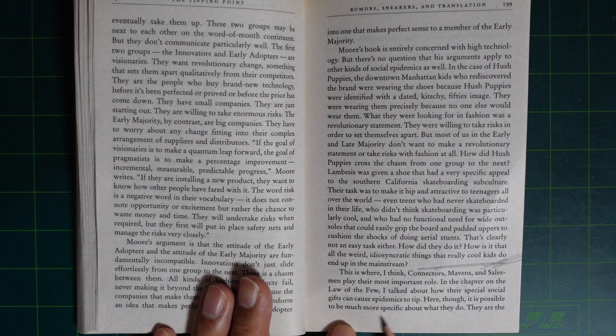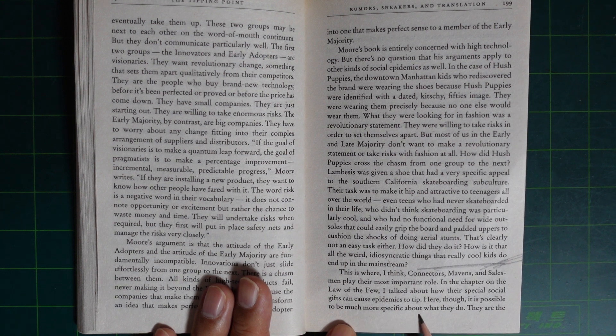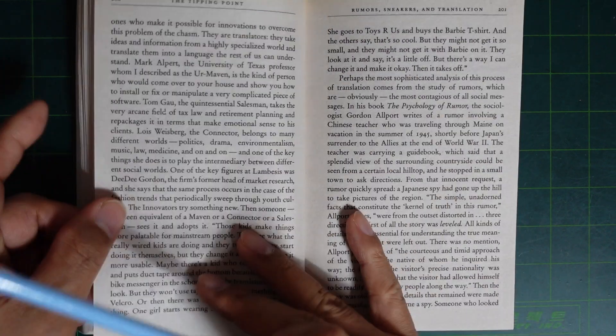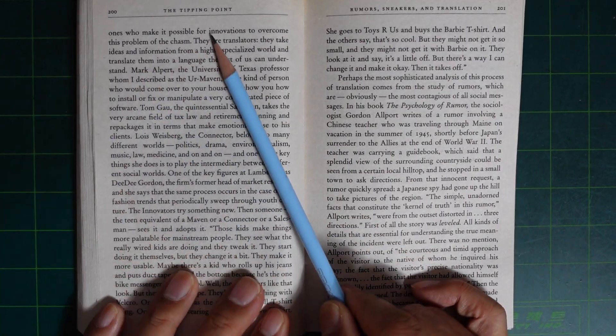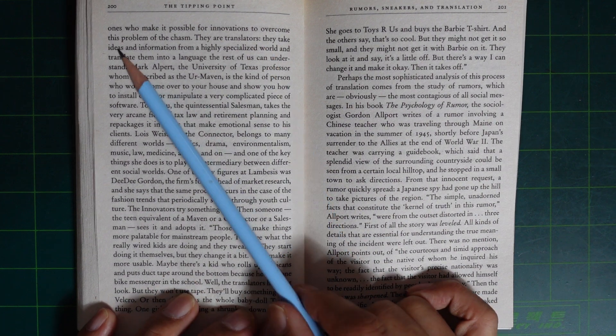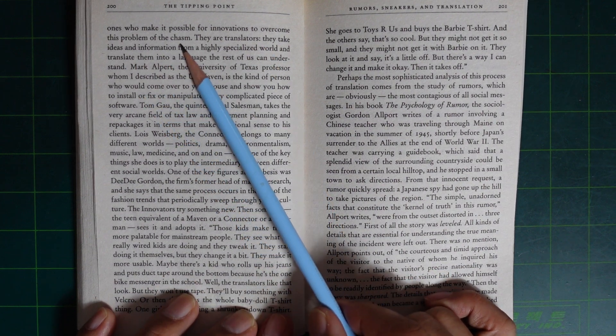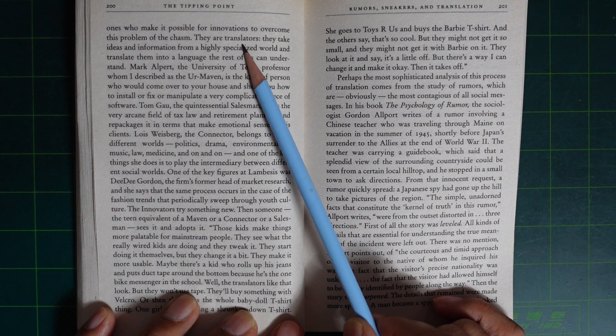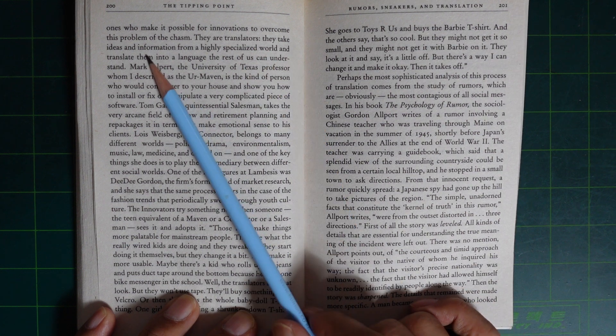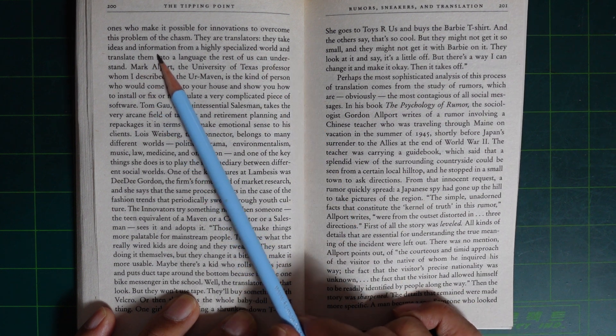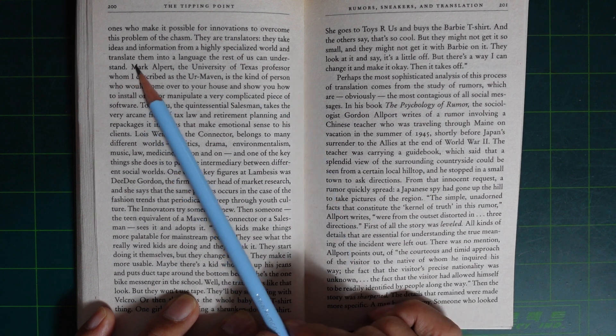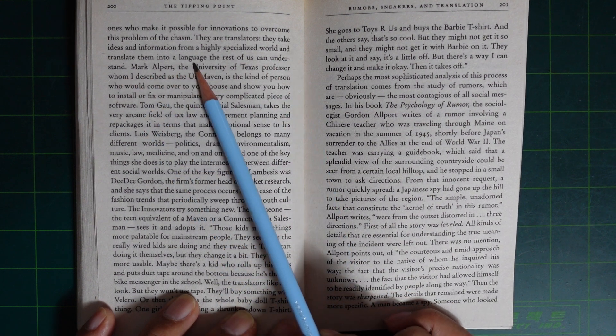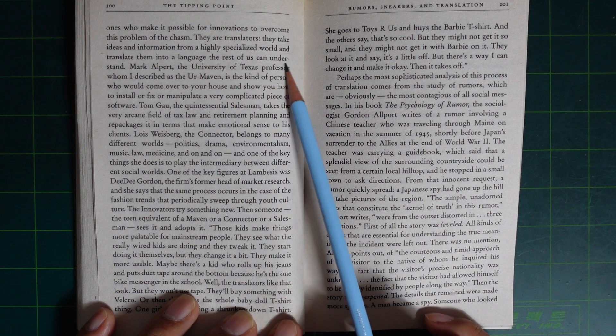Here though, it is possible to be much more specific about what they do. They are the ones who made it possible for innovation to overcome the problem of the chasm. They are translators. They take ideas and information from a highly specialized world and translate them into a language the rest of us can understand.